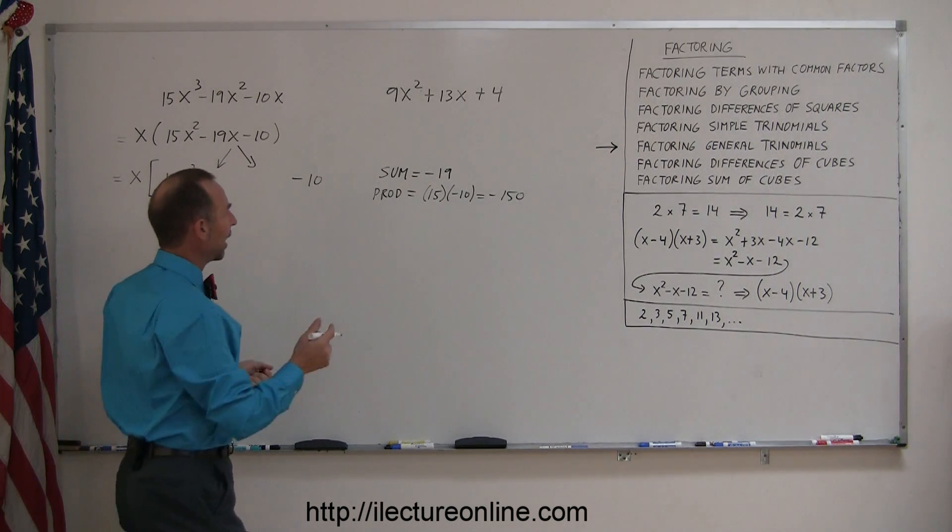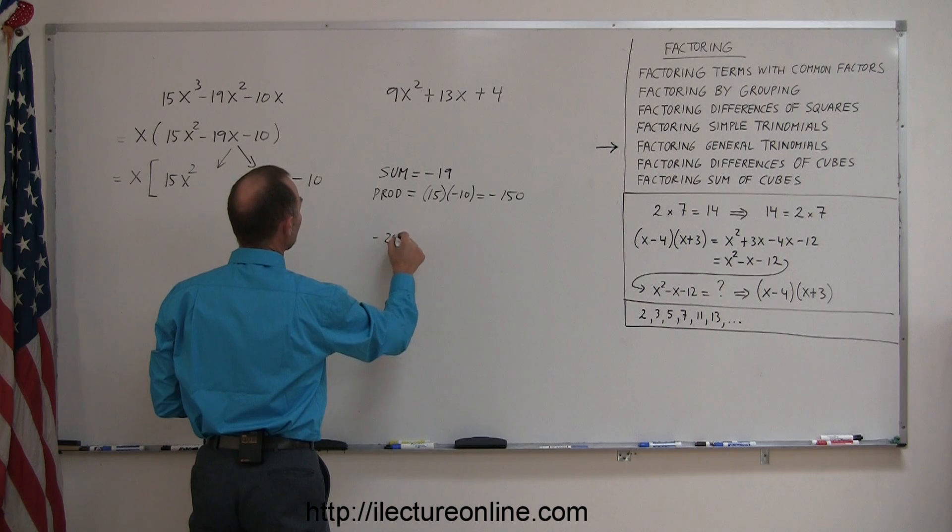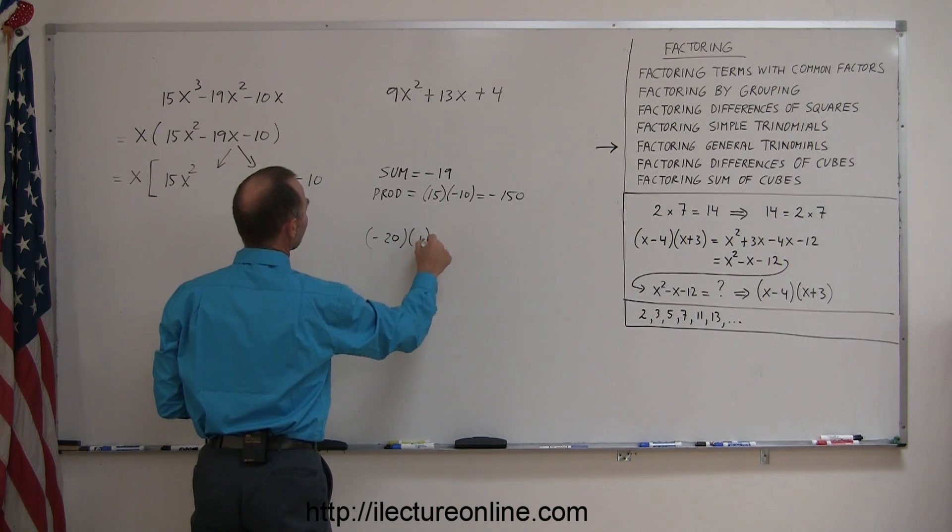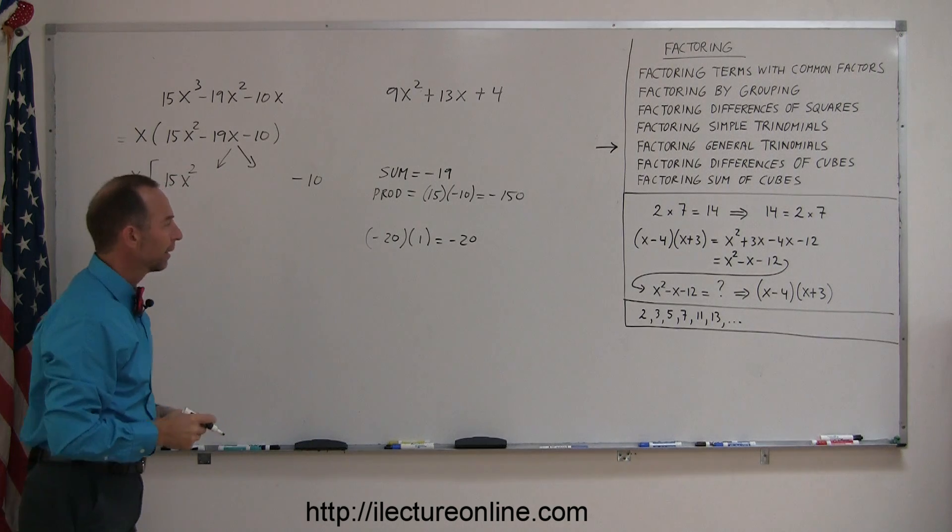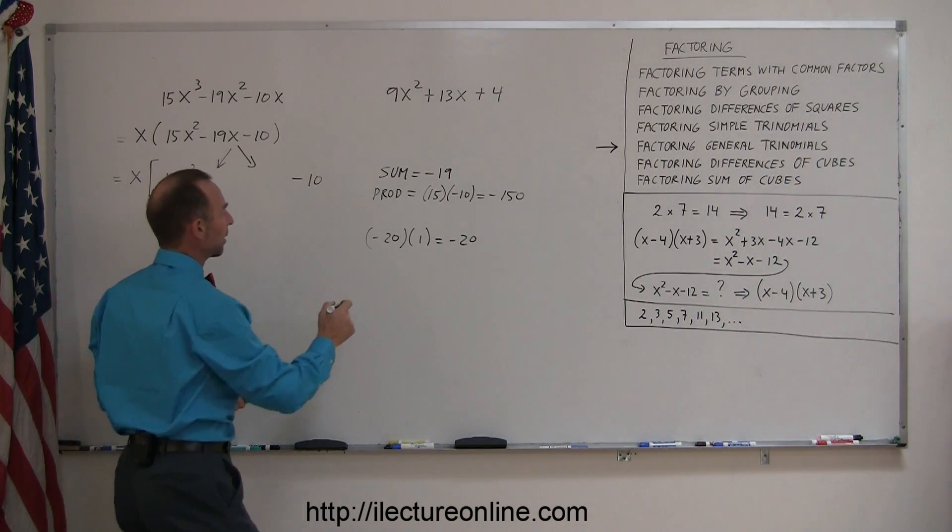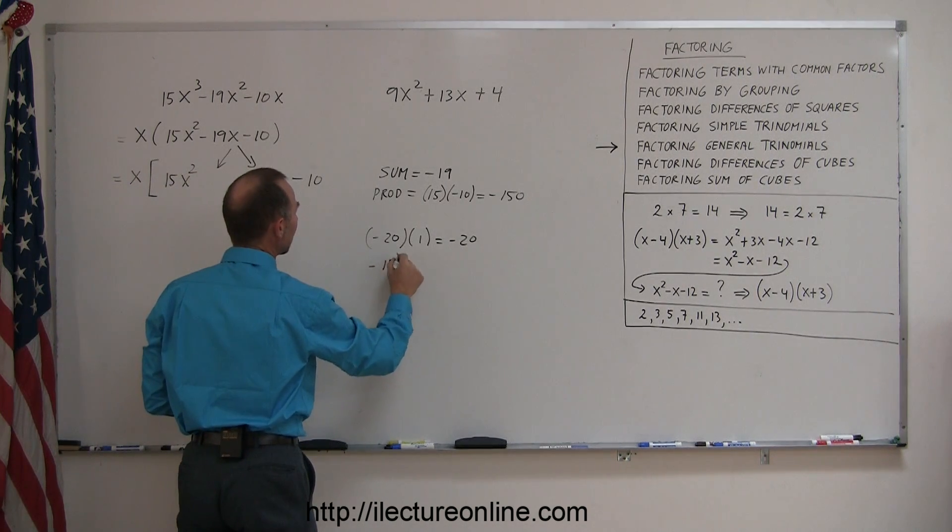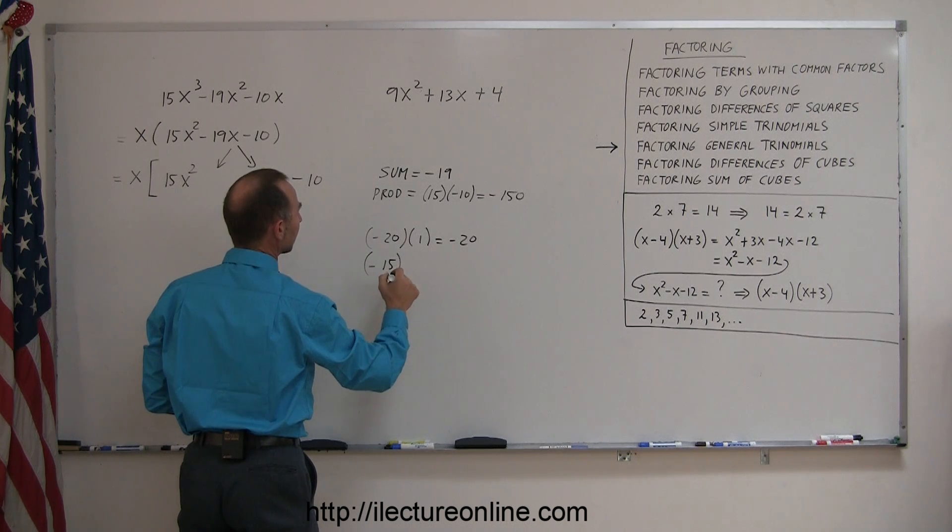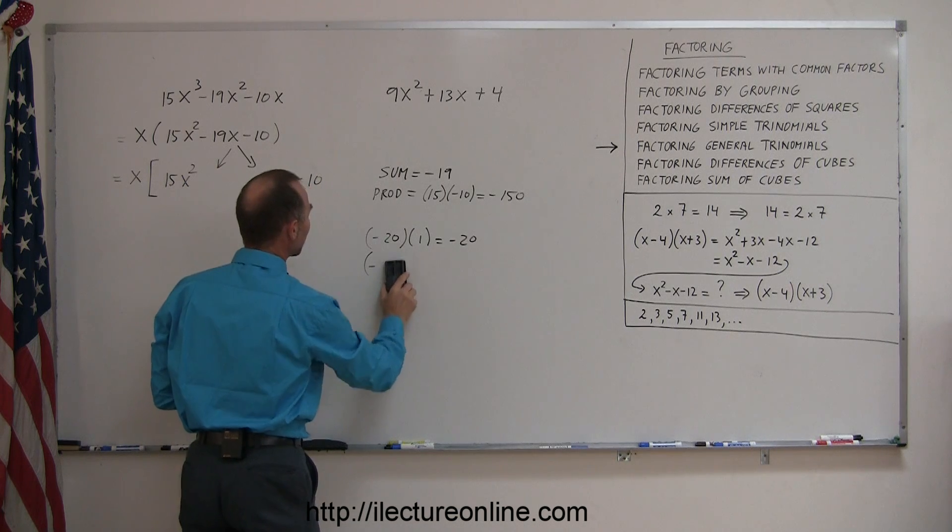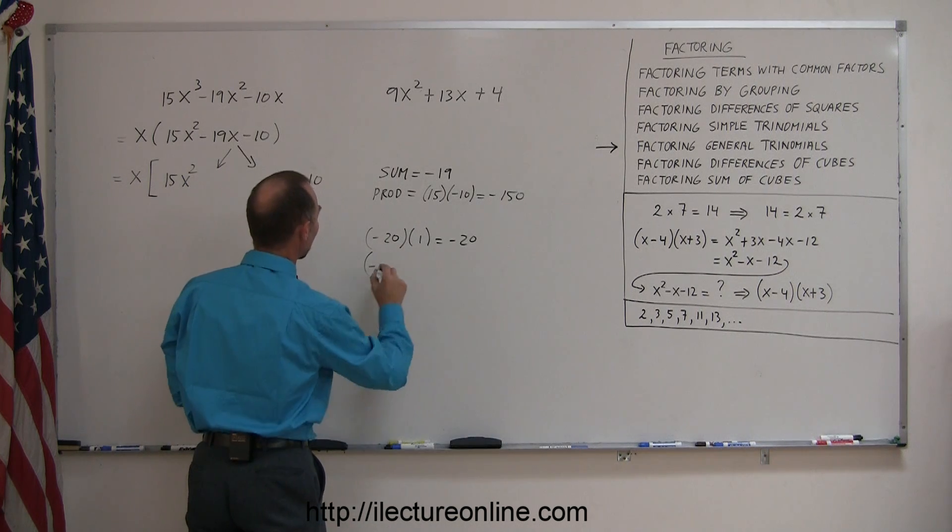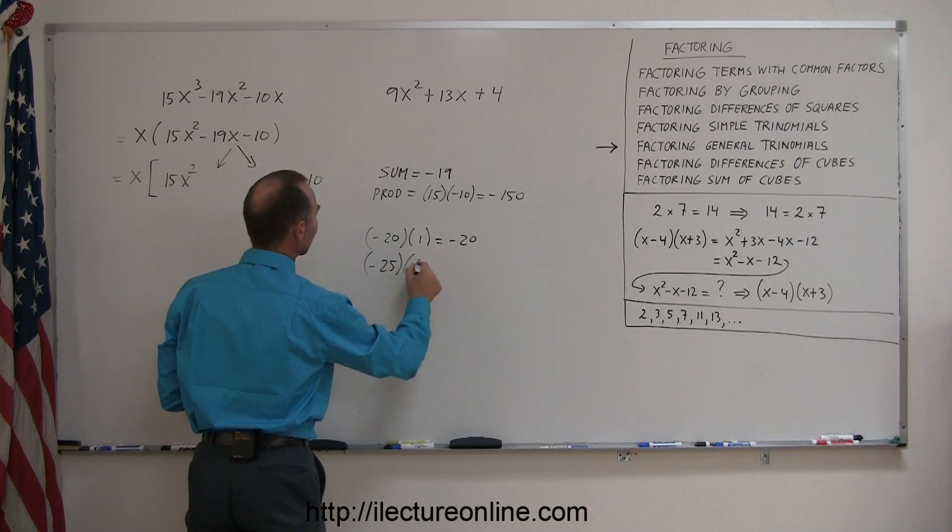Alright, so how about negative 20 and a positive 1? Well that gives you negative 20 which is not 150. Let's jump a few numbers, let's try minus 15 and a... oh I need to go up, I can't go down, it needs to be a bigger number.